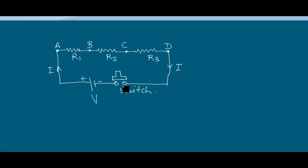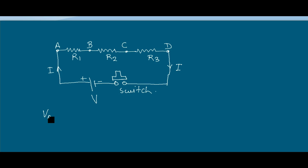This is a battery — a source of voltage V — and there is a push switch. There are four points: A, B, C, and D. These points are at different potentials. Point A is at maximum potential, which we call VA. Similarly, the potential of point B is VB and the potential of point C is VC.